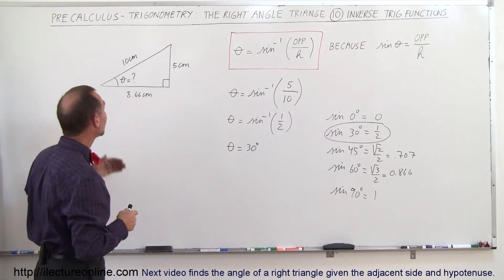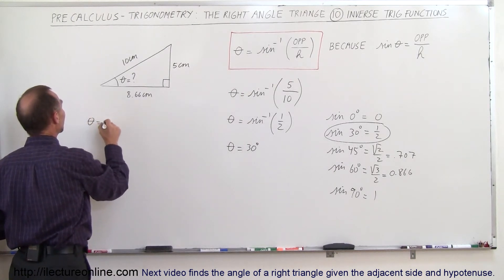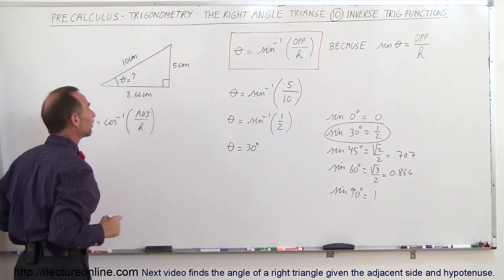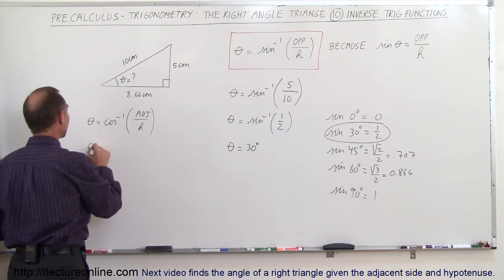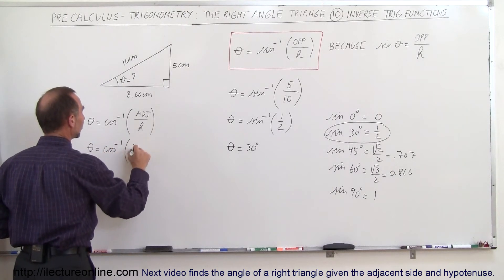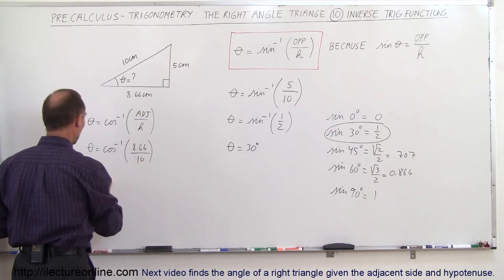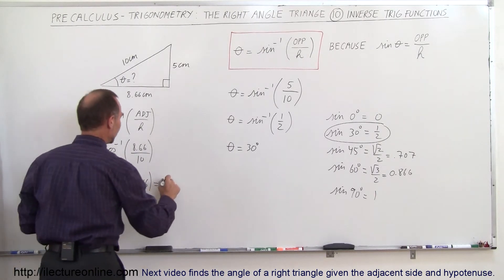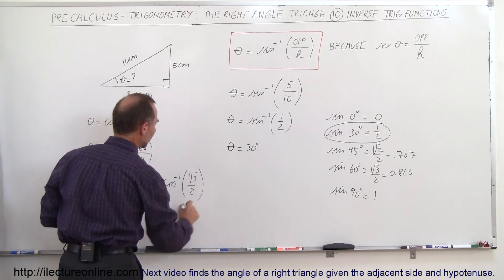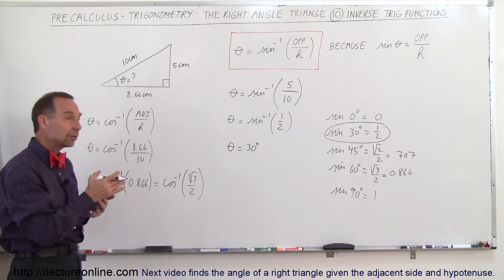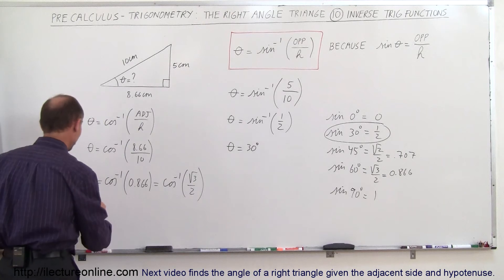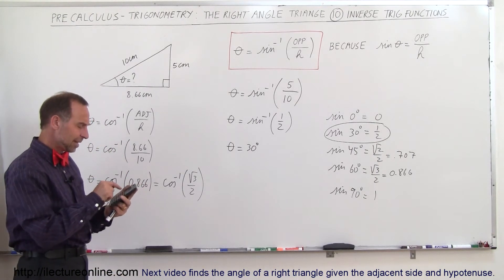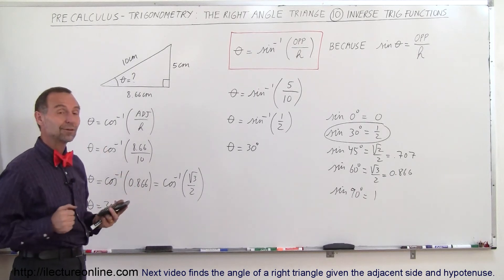We could also use the inverse cosine function. We can say that theta is equal to the inverse cosine of the adjacent side divided by the hypotenuse. In this particular problem, theta is equal to the arc cosine of 8.66 divided by 10, or the arc cosine of 0.866, which is equal to the arc cosine of the square root of 3 over 2. For what angle is the cosine equal to the square root of 3 over 2? That's 30 degrees. So theta is equal to 30 degrees. You can also grab your calculator, punch in 0.866, take the inverse cosine, and there it is — 30 degrees.